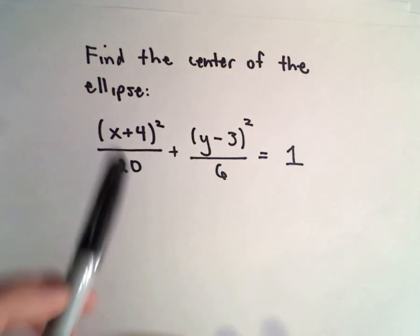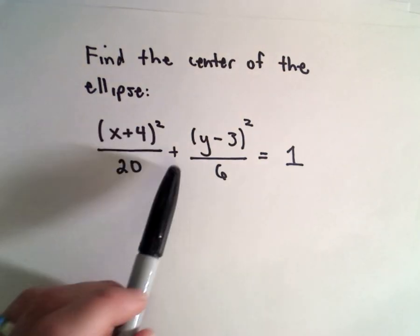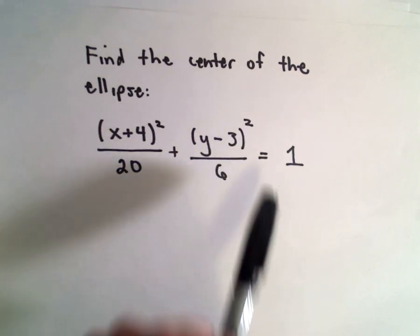Okay, here we're going to find the center of the ellipse: (x+4)² divided by 20 plus (y-3)² divided by 6 equals 1.